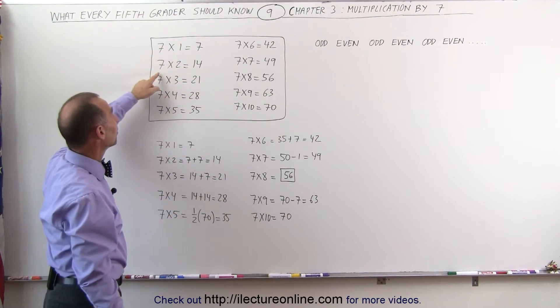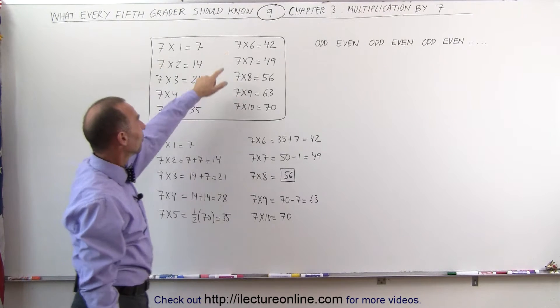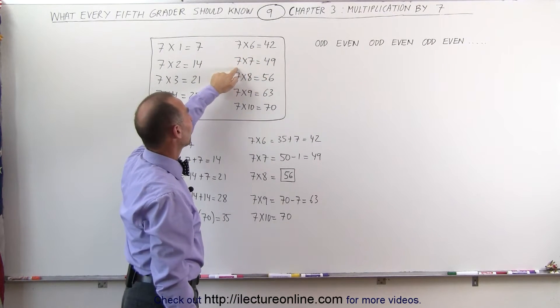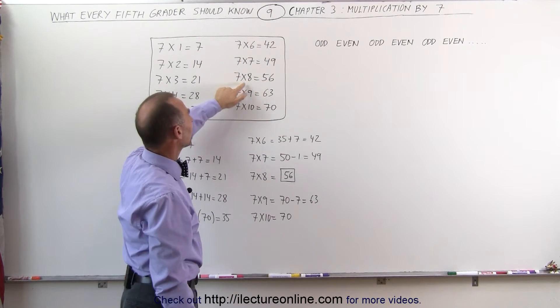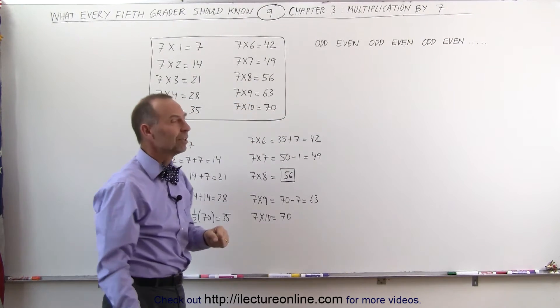7 times 1 is 7, 7 times 2 is 14, 7 times 3 is 21, 7 times 4 is 28, 7 times 5 is 35, 7 times 6 is 42, 7 times 7 is 49, 7 times 8 is 56, 7 times 9 is 63, and 7 times 10 is equal to 70.